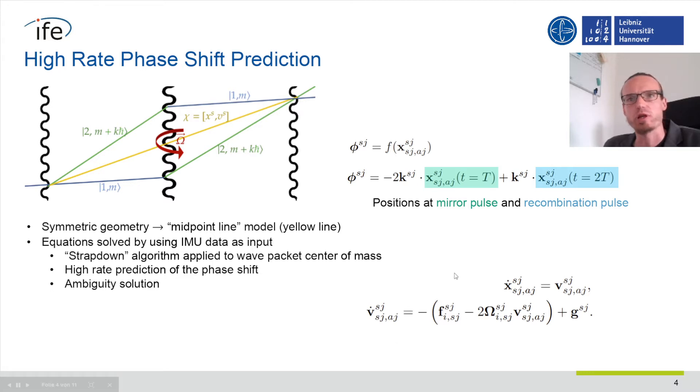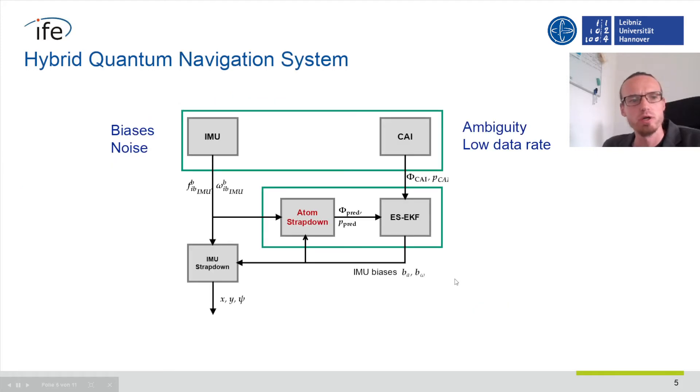The kinematic equations are very similar to those of the standard strapdown algorithm, hence the name Atom Strapdown. It can be implemented in a higher level navigation system. Here we use an error state EKF which fuses the prediction with the actual signal of the interferometer in the observation space. This allows estimating the bias of the accelerometers and gyroscopes and thus reduce the long-term drift of the solution.